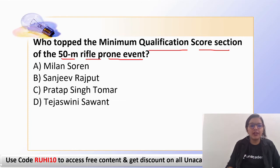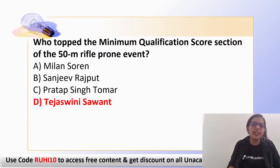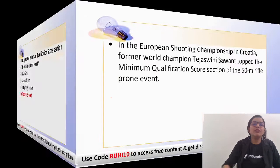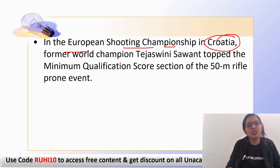The next question: who topped the minimum qualification score in the 50-meter rifle prone event? The answer is Tejaswini Sawant. She topped the minimum qualification score in the 50-meter rifle prone event at the European Shooting Championship held in Croatia.